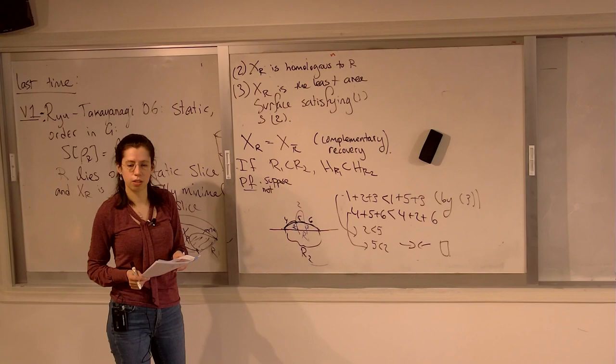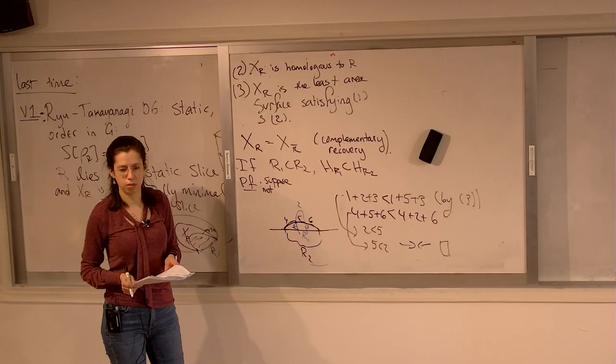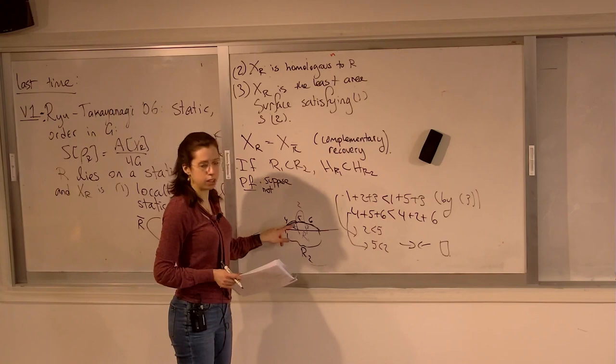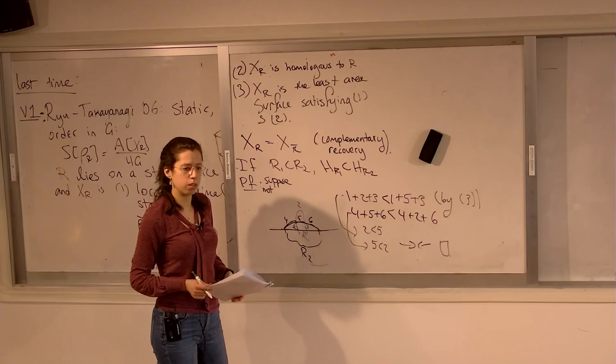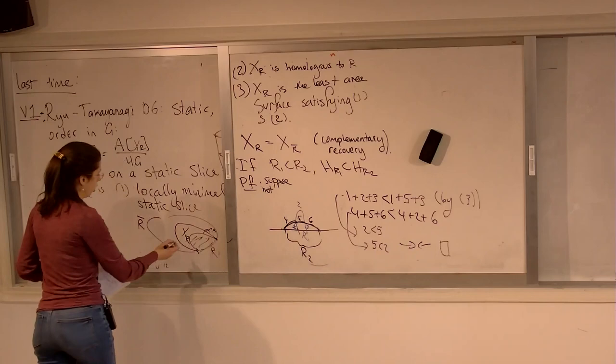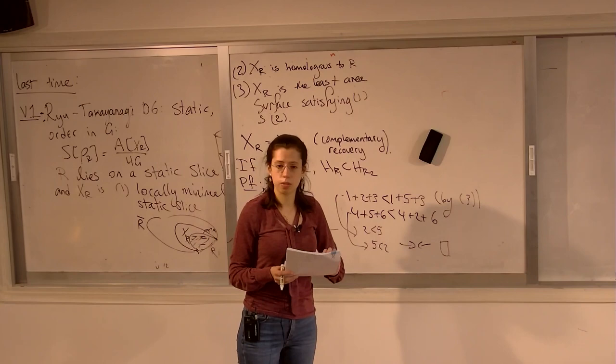If you have two segments, then the Ryu-Takayanagi surfaces will undergo some phase transition as a function of the distance between them — but it also depends on the bulk geometry between them. You could imagine having some very unusual bulk geometry. Capital H is this homology hypersurface — the region between them.